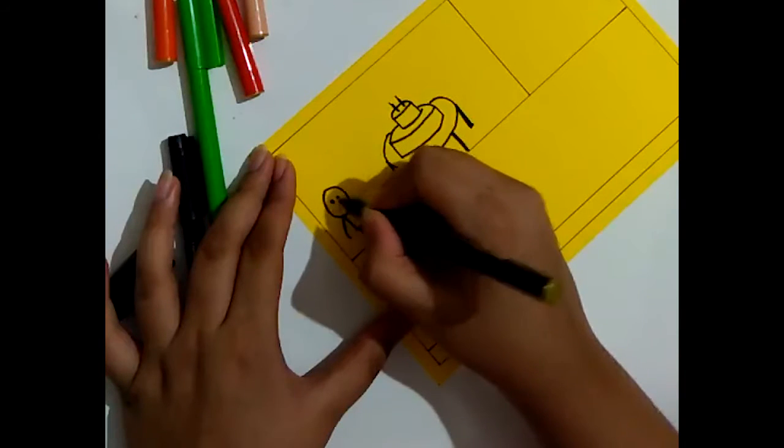Now we will draw the friends who are having the party with smiles on their faces and caps on their heads. Another friend, and the other two friends on the other side. Now the background decoration.